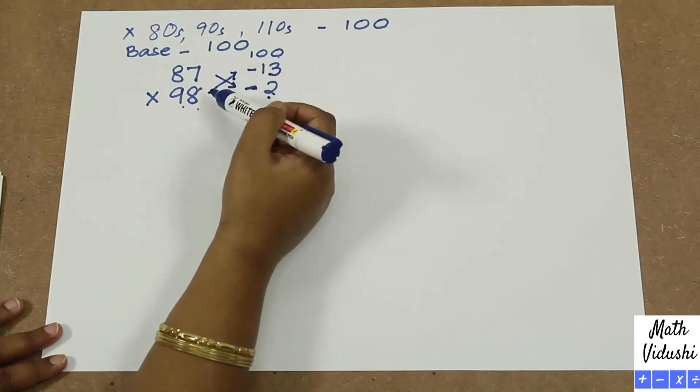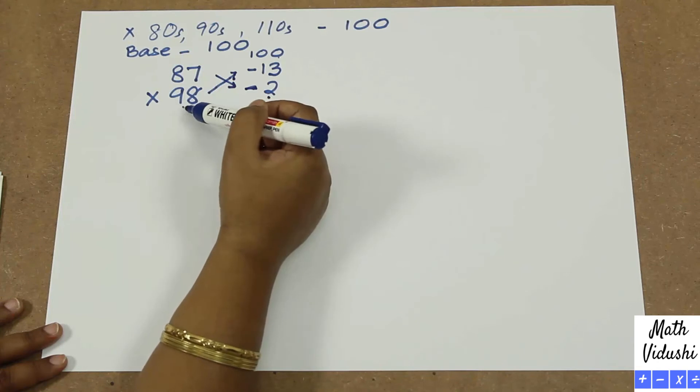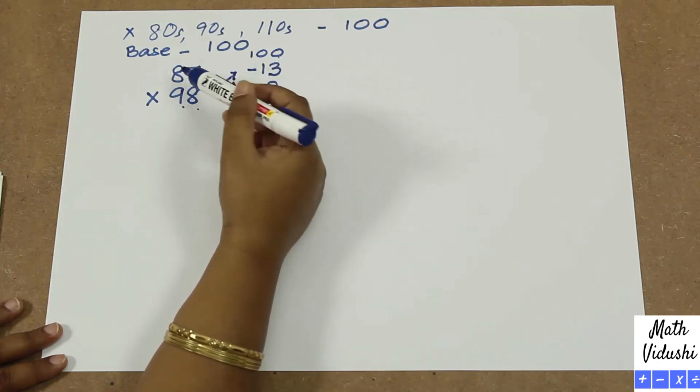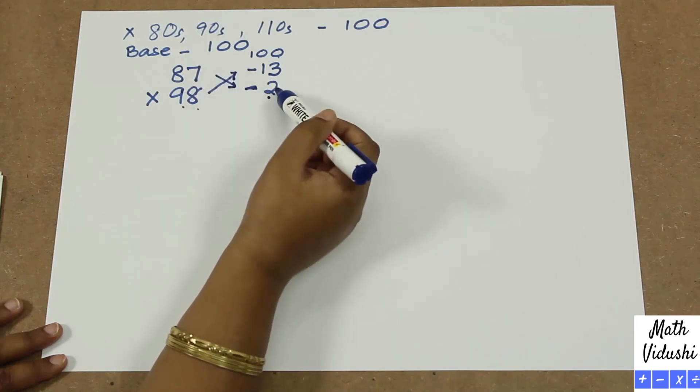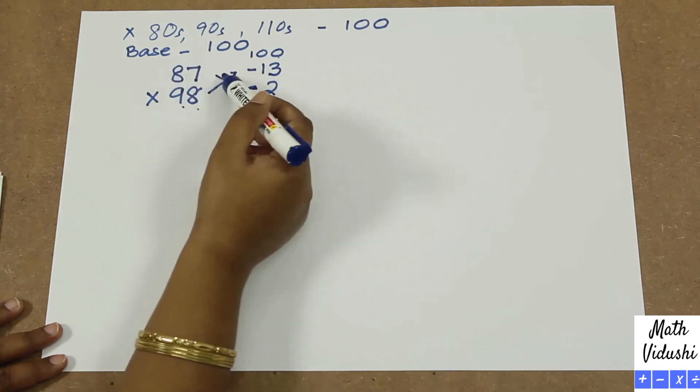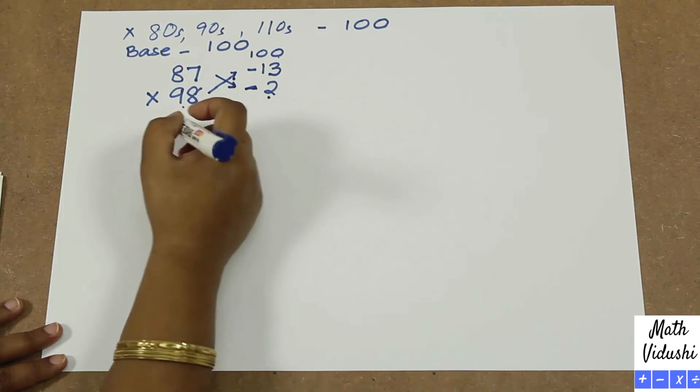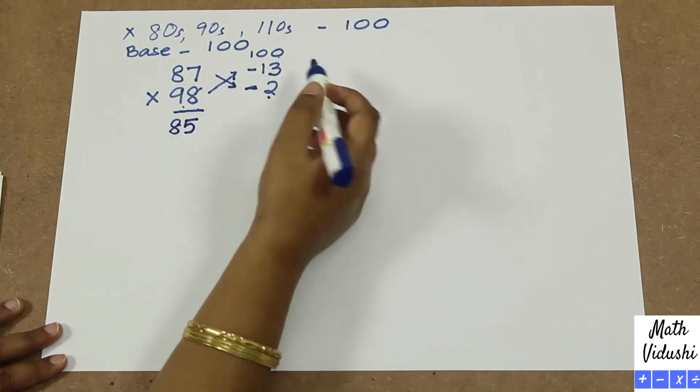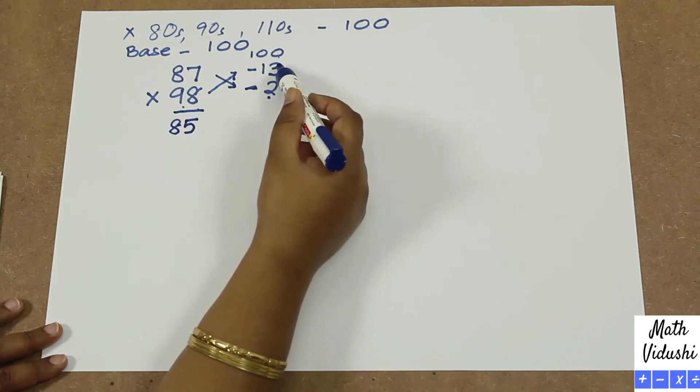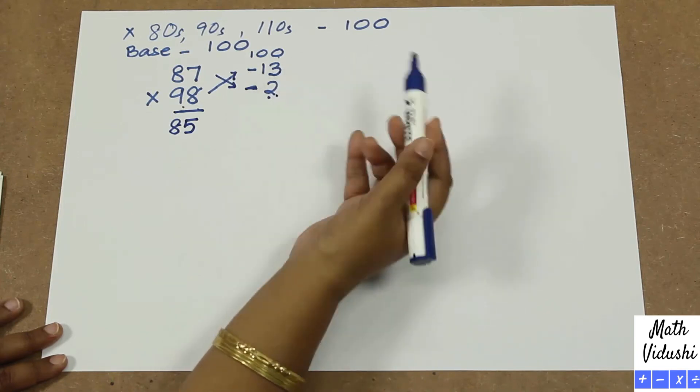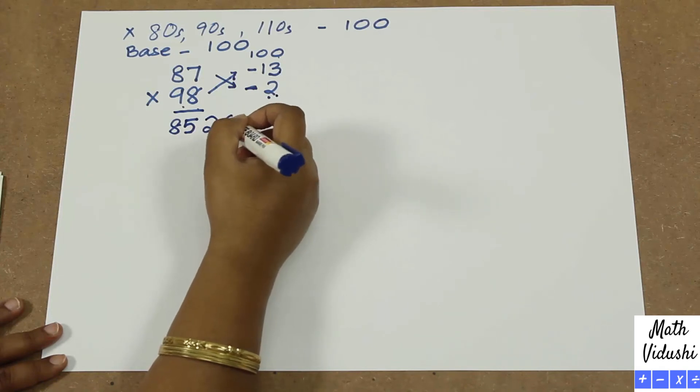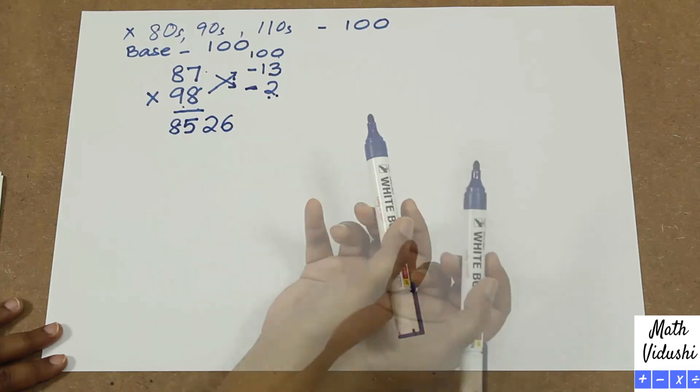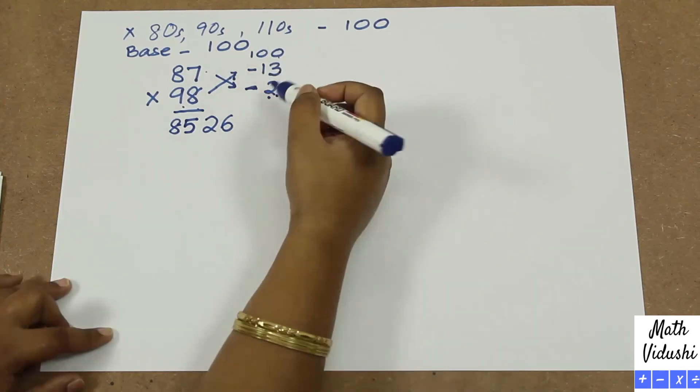You can take either way, either subtraction, whichever you find easy you can take. See, 98 minus 13 may be a little more difficult than 87 minus 2. So we will do 87 minus 2 here and we get 85, and we multiply this: 13 multiplied by 2 is 26. So 87 multiplied by 98 is 8526. How did that come? Let's see another problem.